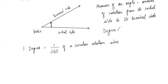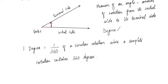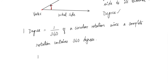Since a complete rotation contains 360 degrees, one degree is 1 over 360. When writing 90 degrees, you either write the word 'degrees' or use the degree symbol — that little circle. If you write just the number 90 without any unit, it is understood differently, as we have another measure for angles called radians.